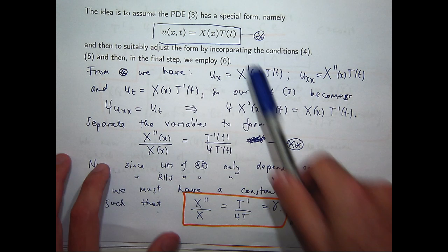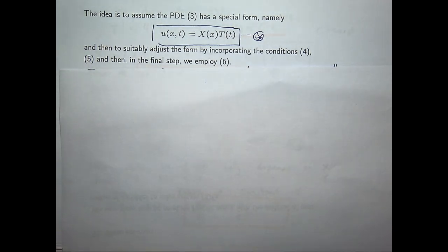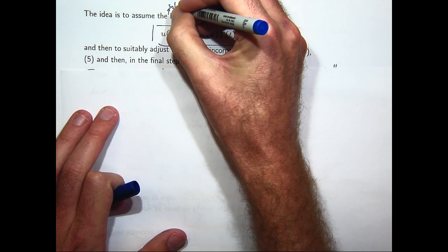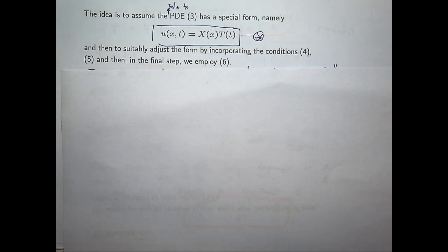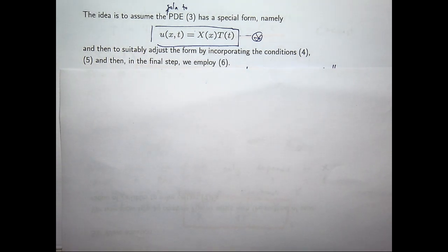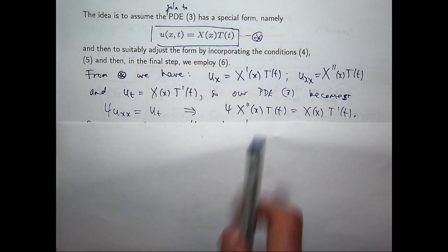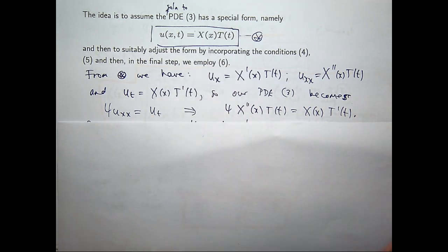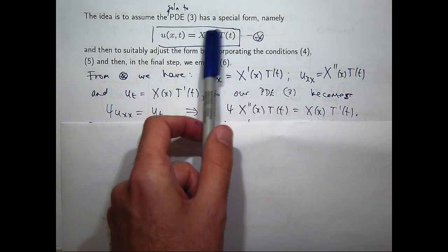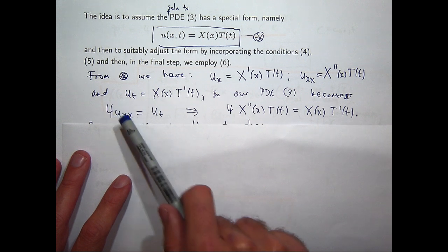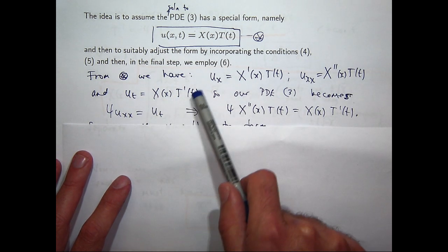So the idea is to assume the solution to the PDE has a special form: the temperature is a function of position, big X of little x, times a function of time, big T of little t. Then you adjust that form by incorporating the boundary conditions and, right at the end, you employ the initial temperature. With this format, you calculate the derivatives in your PDE — here I've got u sub x,x and u sub t — and then substitute. Here would go here and here would go here.